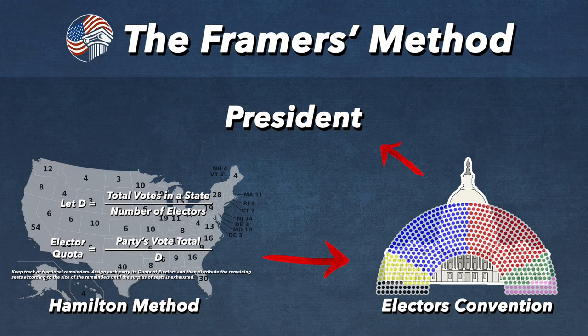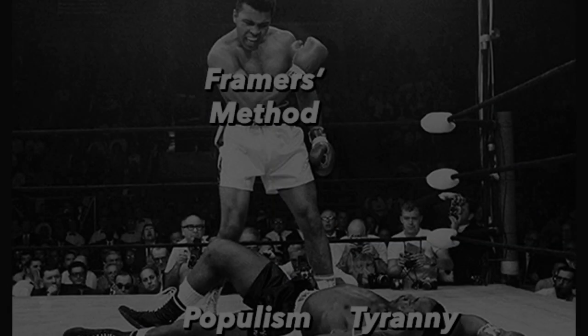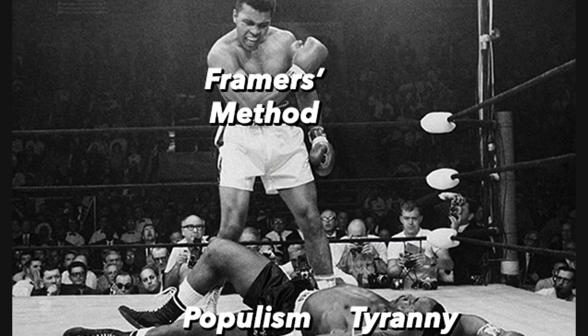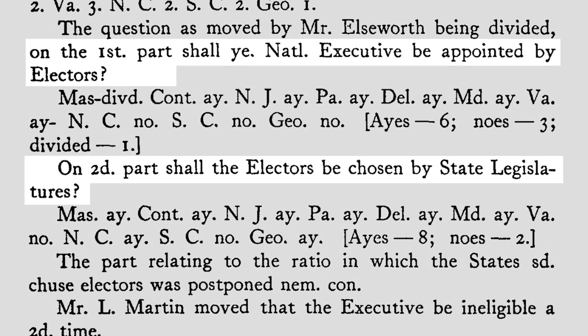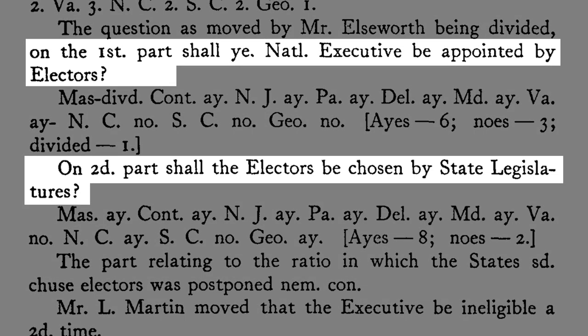The framers' method advocates for the Hamilton method and an electors' convention as the key reforms needed to defeat populism and tyranny. An electors' convention, discussed at the Constitutional Convention and previously referred to as the electors' method, would use decentralization and deliberation to select the president.